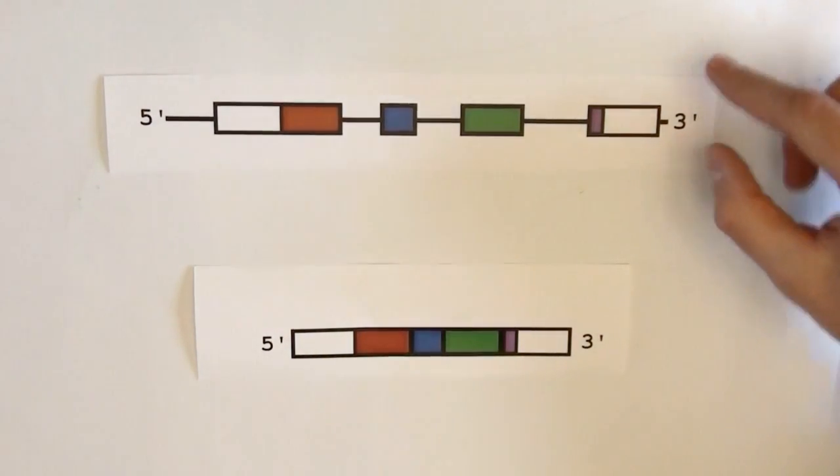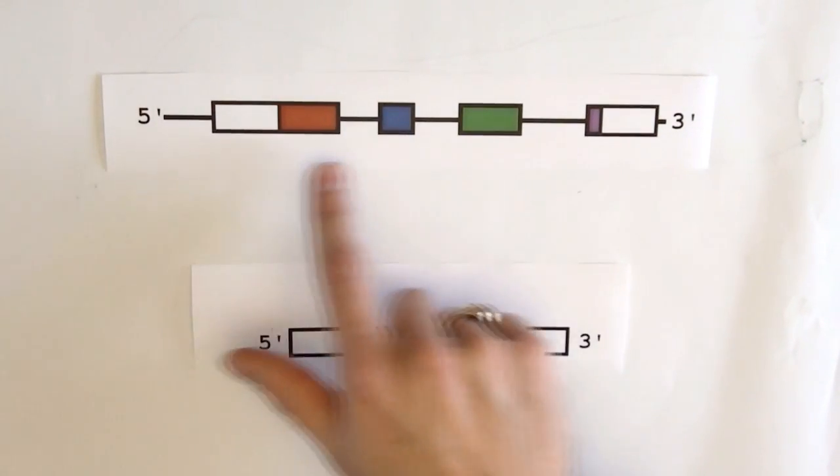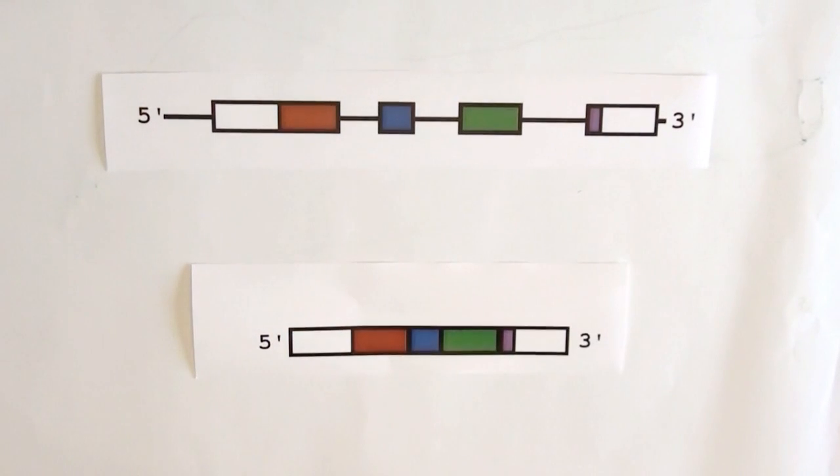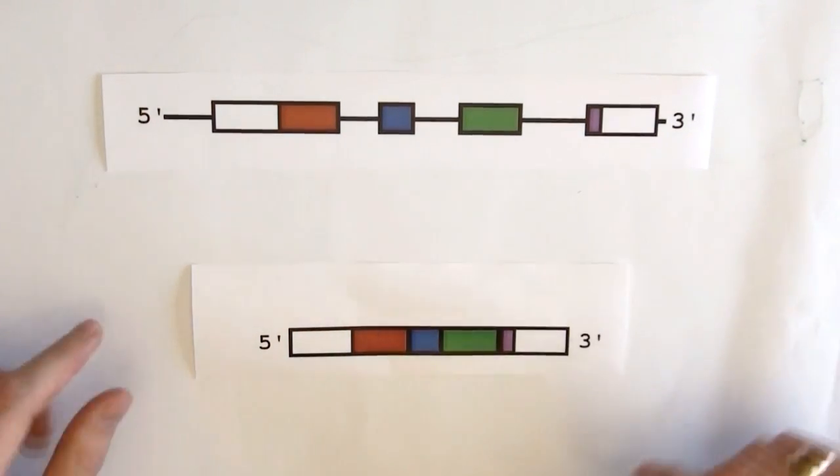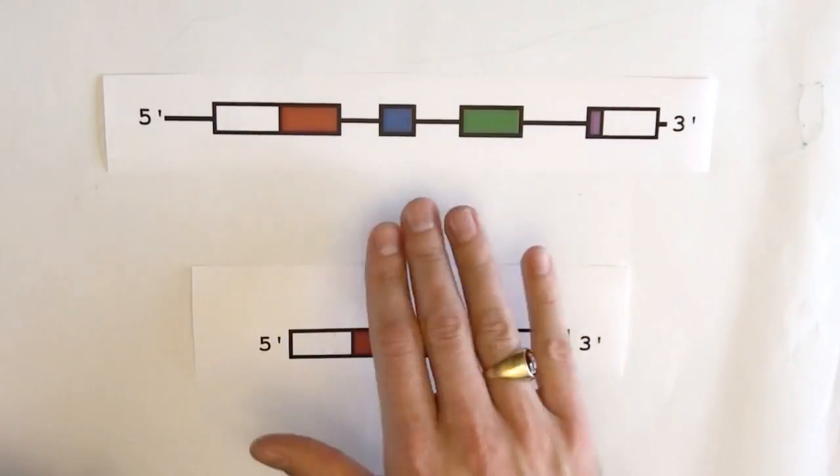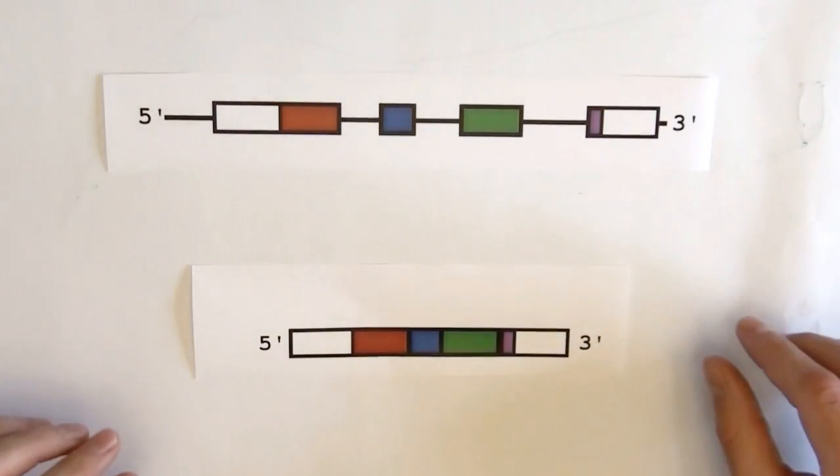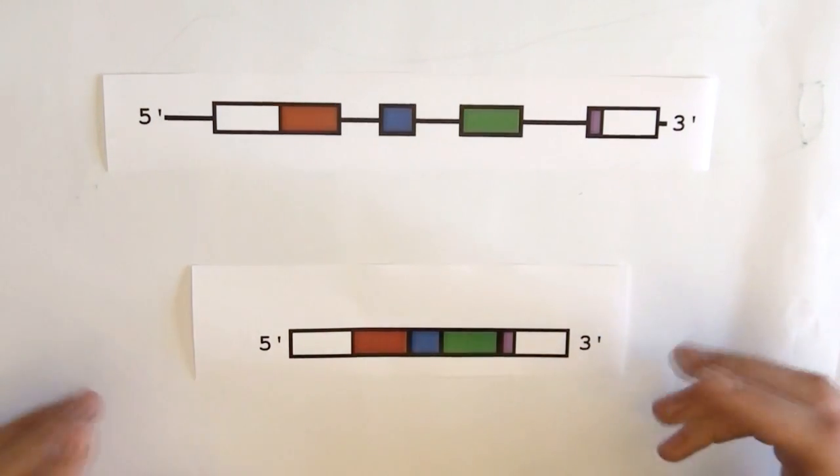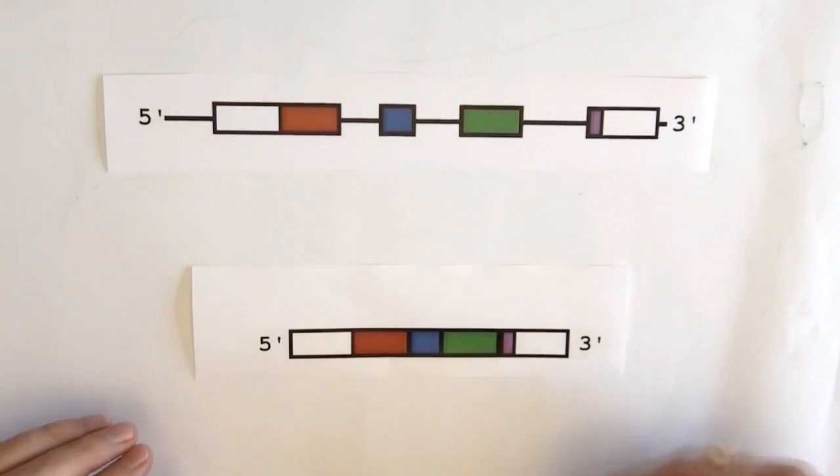A lot of us have seen this type of form. We're dealing with intron and exon structure. We've got the 5' end and the 3' end of our RNA, and the boxes indicate exons. What's in between the boxes are introns, and we need to get rid of those.